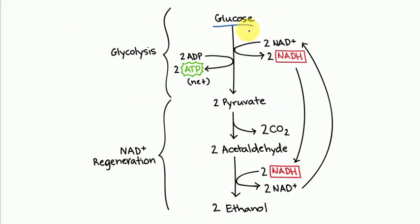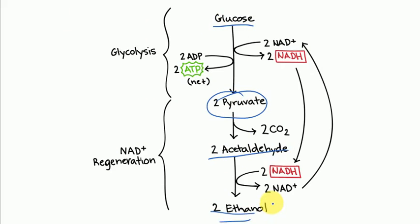In alcohol fermentation, glucose is converted to pyruvate, then to acetaldehyde, and the final product is ethanol.